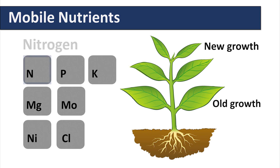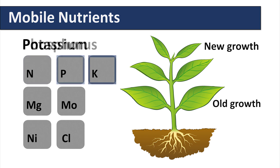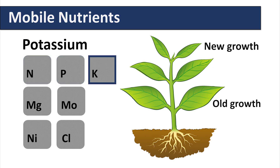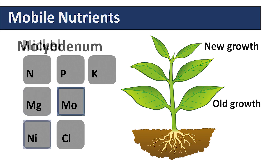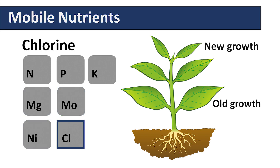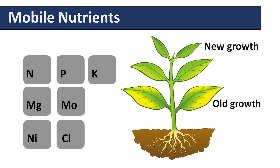The mobile nutrients include nitrogen, phosphorus, potassium, magnesium, molybdenum, nickel, and chlorine. If nutrient deficiencies occur, deficiency symptoms will appear in the oldest growth because the nutrients can be mobilized from the older leaves and directed to the new growth at the top of the plant.